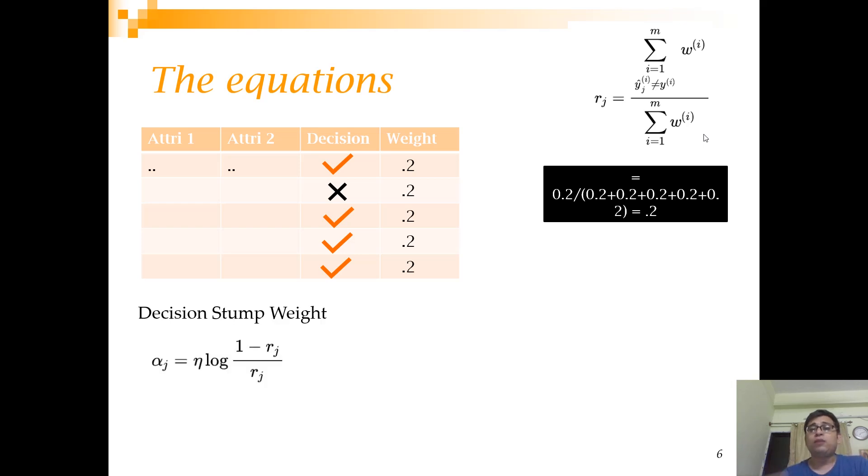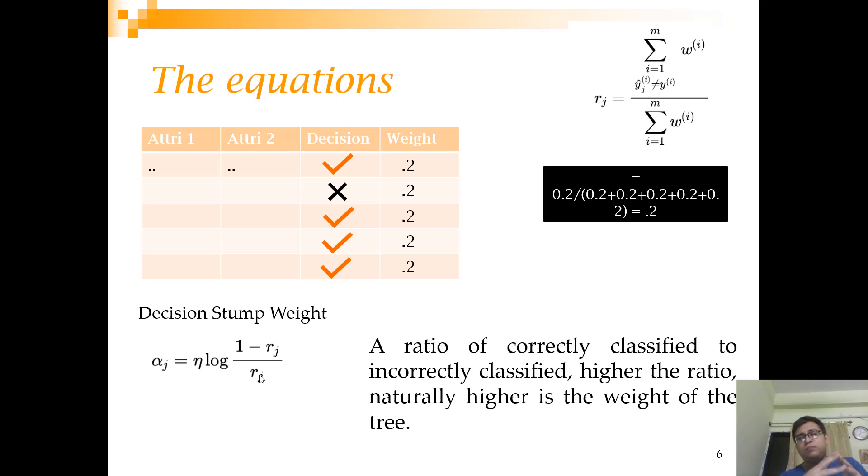Now let's look at the weight of the decision stump. The weight comes from how accurate this decision is. So this is your misclassification - Rj. 1 minus Rj is actually how many times you are correct, and Rj is how many times you misclassify. The ratio will be bigger for the trees that are classifying better. And eta is a learning rate. So this is the ratio of correctly classified to incorrectly classified. Higher the ratio, naturally higher is the weight of the tree. That's the intuition which is followed.